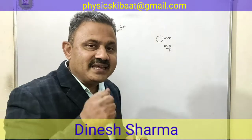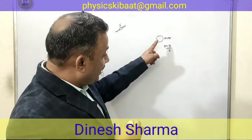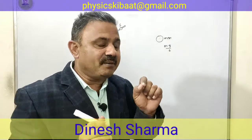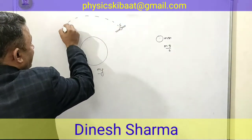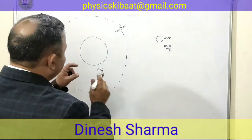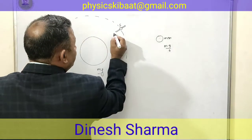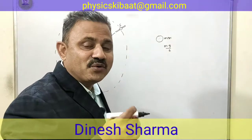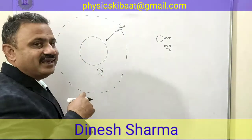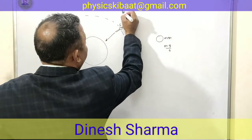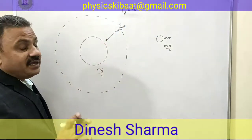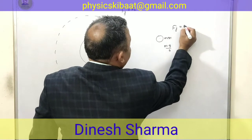Dekhein — jab yeh satellite Earth ke around ghoomega, usko ghoomne ke liye ek centripetal force chahiye. Obviously Moon ko bhi ghoomne ke liye centripetal force chahiye. Dono ko Earth ke around ghoomne ke liye centripetal force chahiye. Yeh satellite jab is path pe ghoomega, this requires some centripetal force, and who will provide that? Obviously Earth ki gravitational field wohi is satellite ko orbit mein ghoomne ke liye necessary centripetal force de raha hai. So the equation here is: Fg (gravitational force) = Fc (centripetal force).